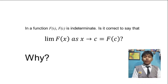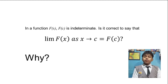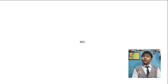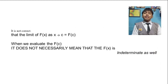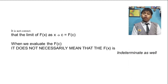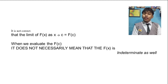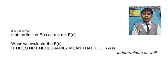In a function f of x, if f of c is indeterminate, is it correct to say that the limit of f of x as x approaches c is equal to f of c? No, it is not correct. When we evaluate f of c with the value of c, the answer may be indeterminate, but it does not necessarily mean that f of x is going to be indeterminate as well.